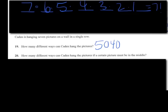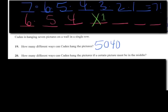Number 20. How many different ways can Caden hang the pitcher if a certain pitcher must be in the middle? Okay, we have the seven pitchers. A certain pitcher must be in the middle. I don't know which one it is. There's going to be one way to put it, however they tell me, however they want it. That leaves me with six choices here. Five, four, three, two, one. That's going to be six factorial, which is 720 different ways.